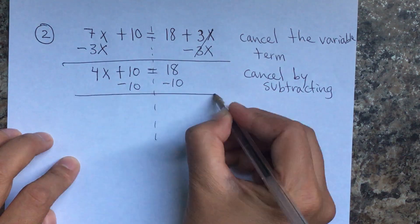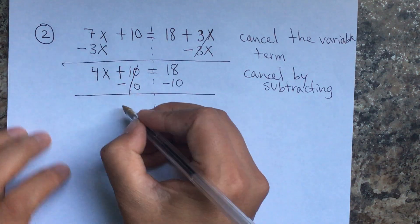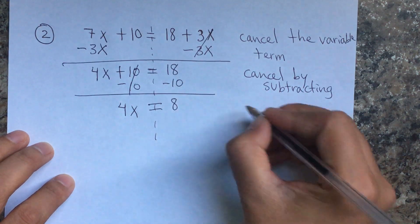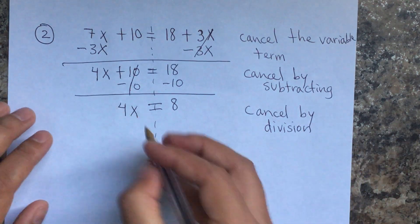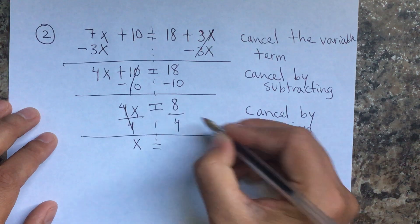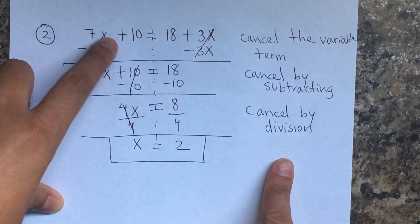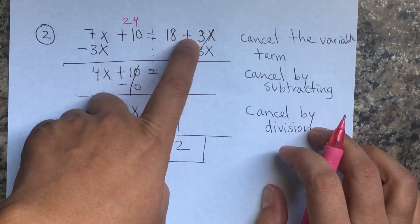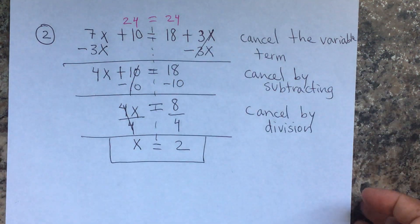Minus 10 minus 10 — cancel the constant. 10 minus 10 is 0, so 4x equals 18 minus 10, which is 8. Then cancel by division: 4 divided by 4 is 1, so x equals 8 divided by 4, which is 2. Quick check: 7 times 2 is 14, plus 10 is 24. On the other side: 18 plus 3 times 2 is 6, so 18 plus 6 is 24. They're equal, so it's right.